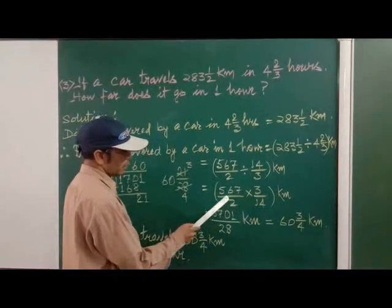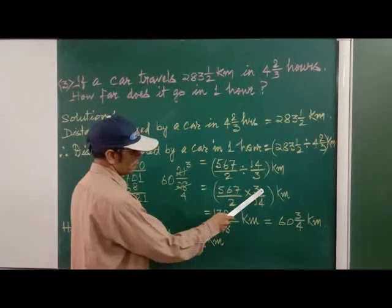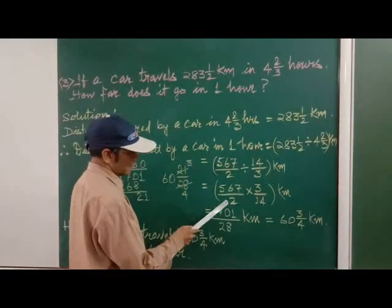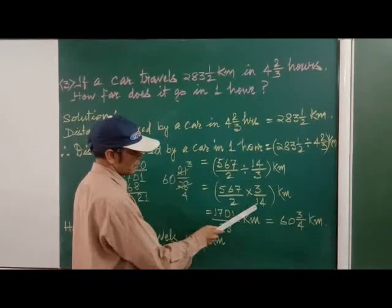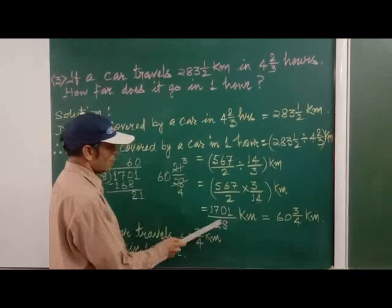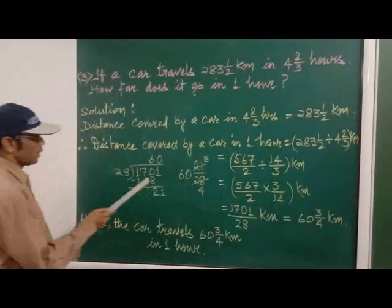Now what we will do? You will multiply the top one. So you will get 1701 and down one, this is denominator part, 2 multiplied by 14 that comes to 28 kilometers. Now we have to divide this one.